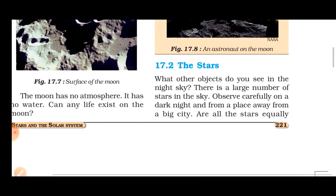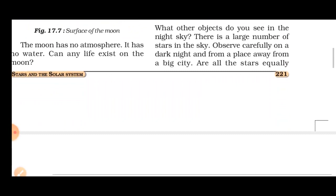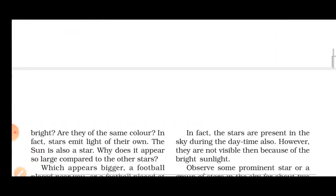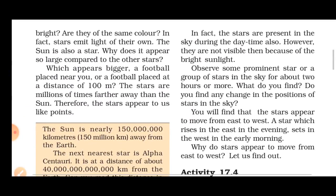What other objects do you see in the night sky? There is a large number of stars in the sky. If you look in the night sky, there are many stars. If you observe them carefully in the dark night, they form a big cluster. You can see that many stars appear the same and they are the same colors.